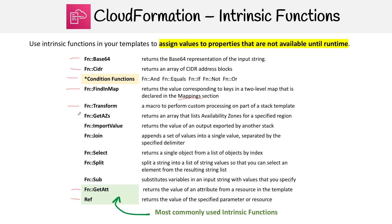Then you have GetAZs, which returns a list of availability zones for a specified region. Then you have ImportValue, which is really important when working with nested stacks. This returns the value of an output exported by another stack — it's a way to have stacks talk to each other.